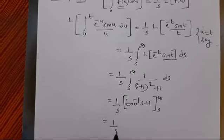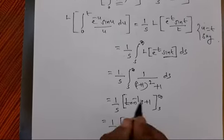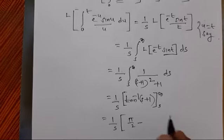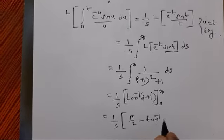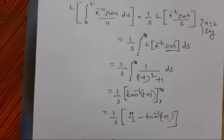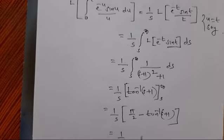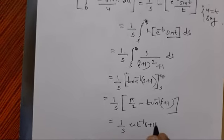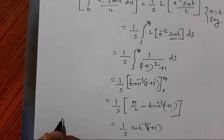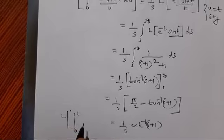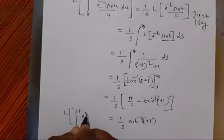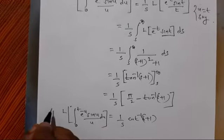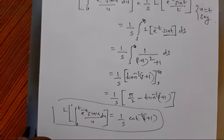This is in the form ∫ 1/(x²+1) dx, whose integral is arctan(x). So we get (1/s) · [tan⁻¹(s+1)] evaluated from s to infinity. We know tan⁻¹(∞) = π/2, so it becomes (1/s) · [π/2 − tan⁻¹(s+1)], which equals (1/s) · cot⁻¹(s+1). This is the required answer for L{∫₀ᵗ e^(-u) · sin(u)/u du}.